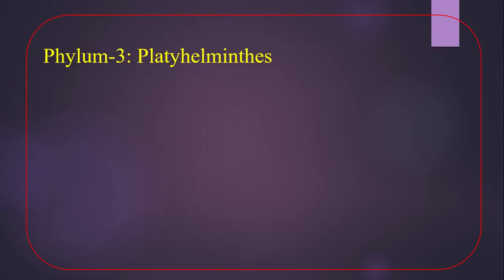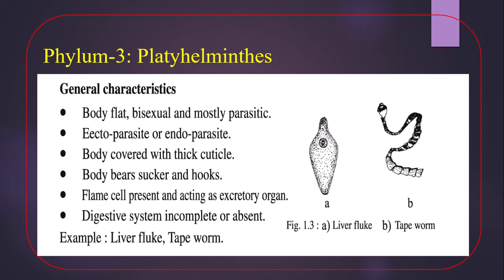Phylum three is Platyhelminthes. General characteristics: the body is flat — flattened dorsoventrally. They are bisexual, meaning they are not divided into separate male and female members.